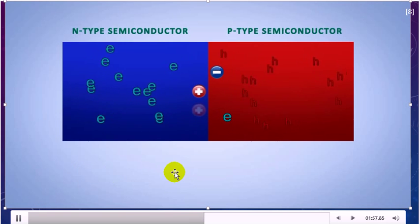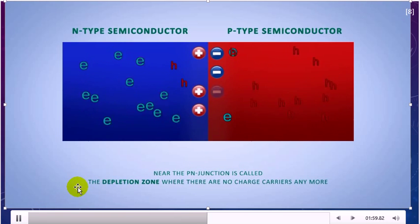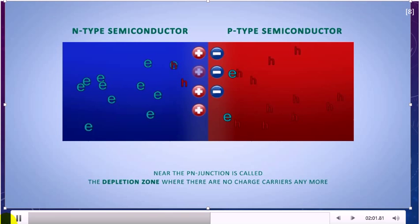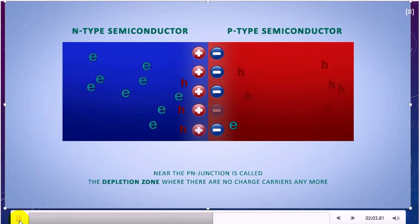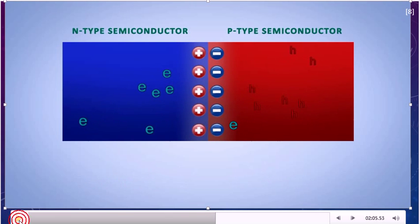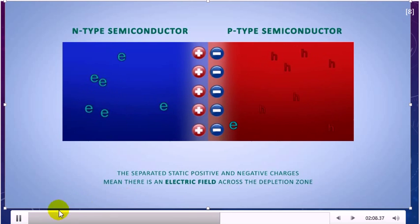Near the PN junction is called the depletion zone where there are no charges and no holes. The separated static positive and negative charges mean there is an electric field across the depletion zone.